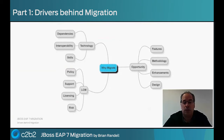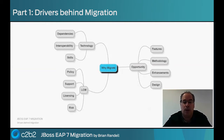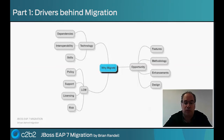Then we have the third high-level consideration, which is the opportunity. If you're moving on to modern new technology, you're going to get the opportunities that arise with that — any new features, enhancements you can make to your own coding, the ability to streamline your design, easier monitoring, greater stability, and better performance. In this fast-moving world, you'll be able to better respond to your users' requirements.